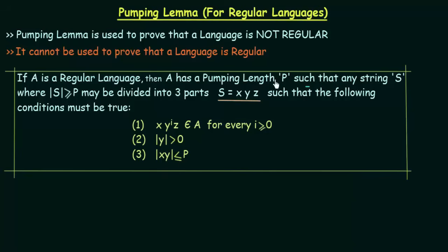P is the pumping length. For a language to be regular, these three conditions must be true. This is what we get from the Pumping Lemma, and now we will see how we are going to prove that a language is not regular using this statement.